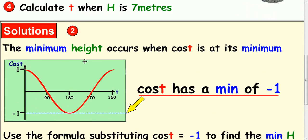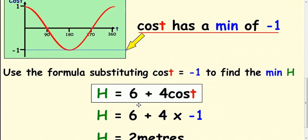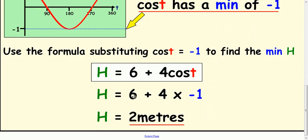To find the minimum, the same thing applies. The minimum value occurs when the cos of t is equal to negative 1. So if we substitute negative 1 into here, you're going to get 6 plus 4 times negative 1, which is 6 take away 4, which is 2. That's how you find the maximum and minimum values.